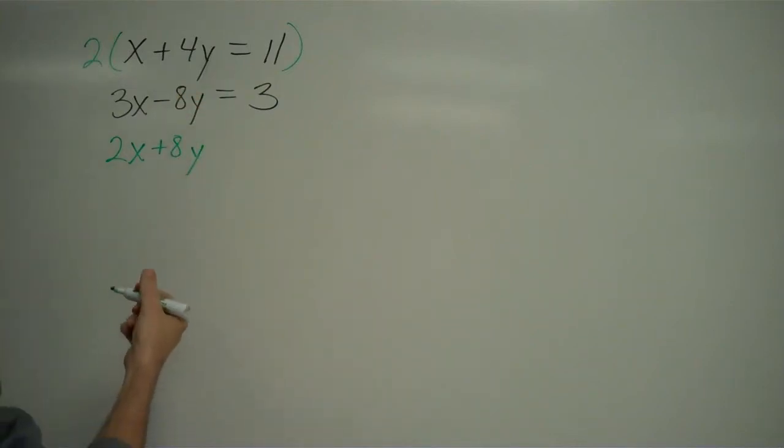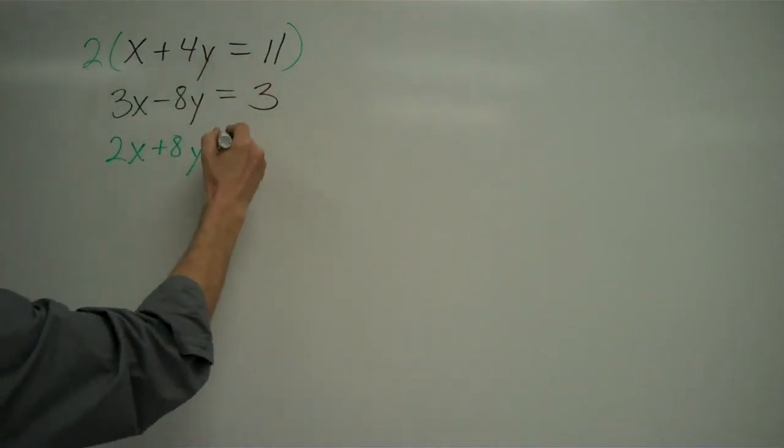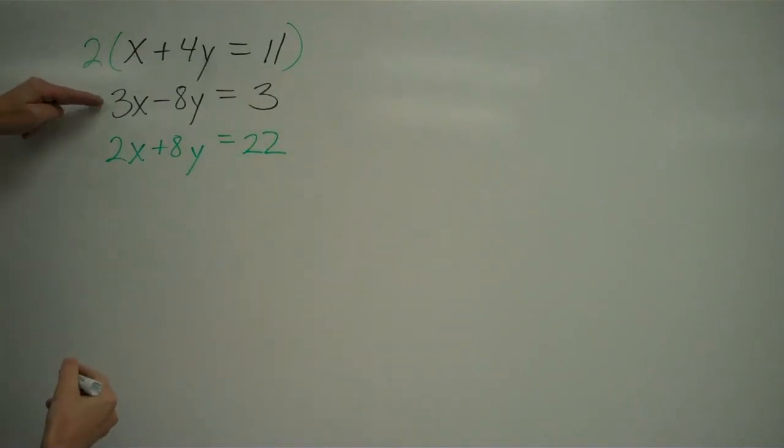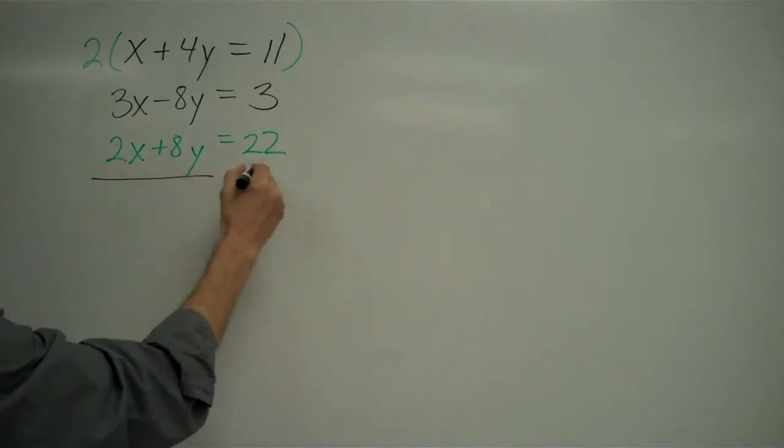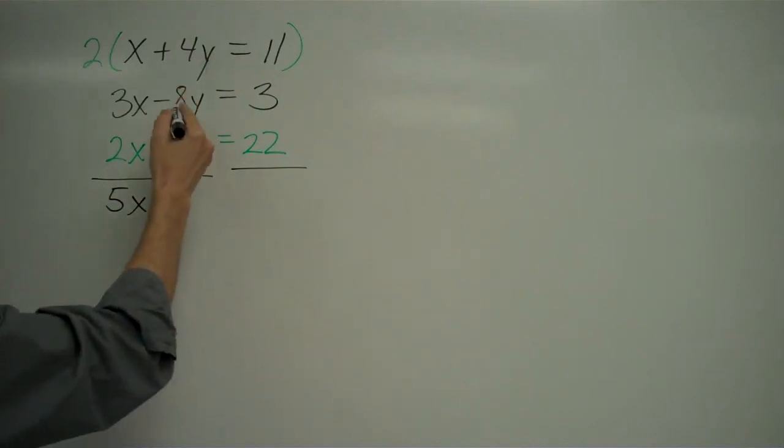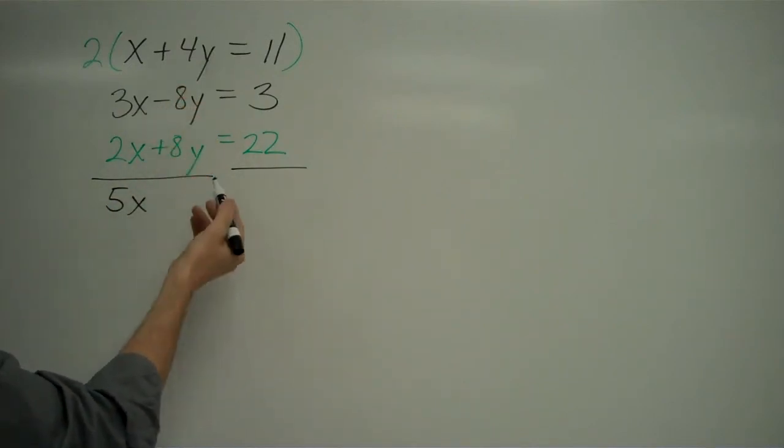The y's are just going to add up to 0. 2 times 11 gets me 22. So now I can add this line to this line and let's see what happens. 3x plus 2x gets me 5x. Negative 8y plus 8y gets me nothing.